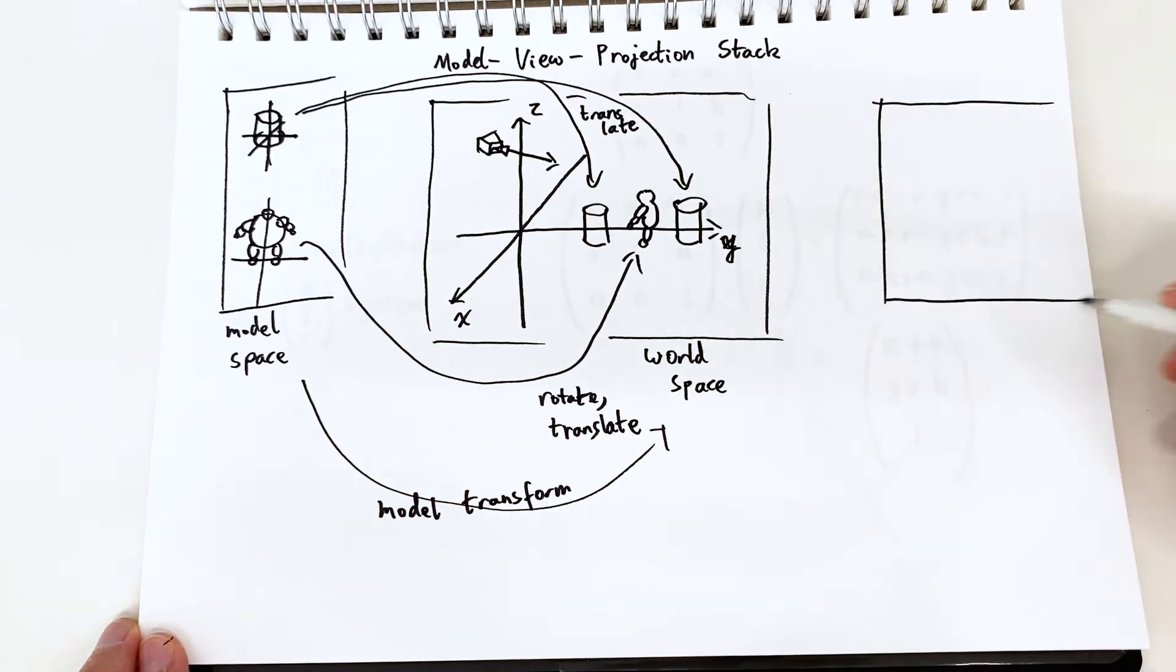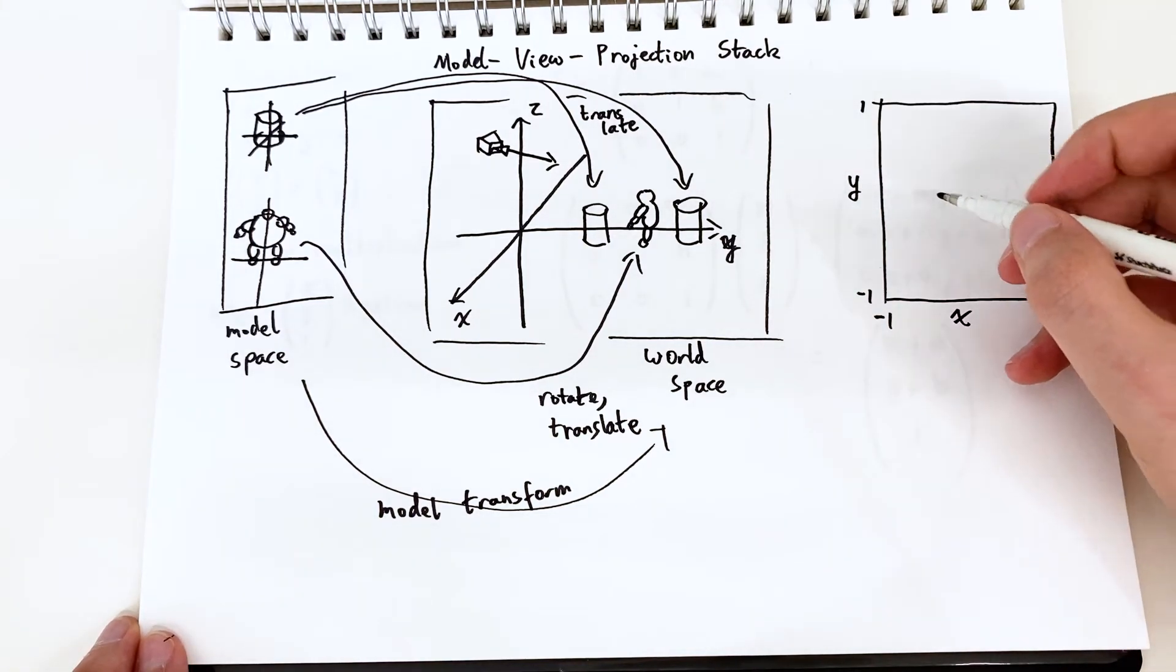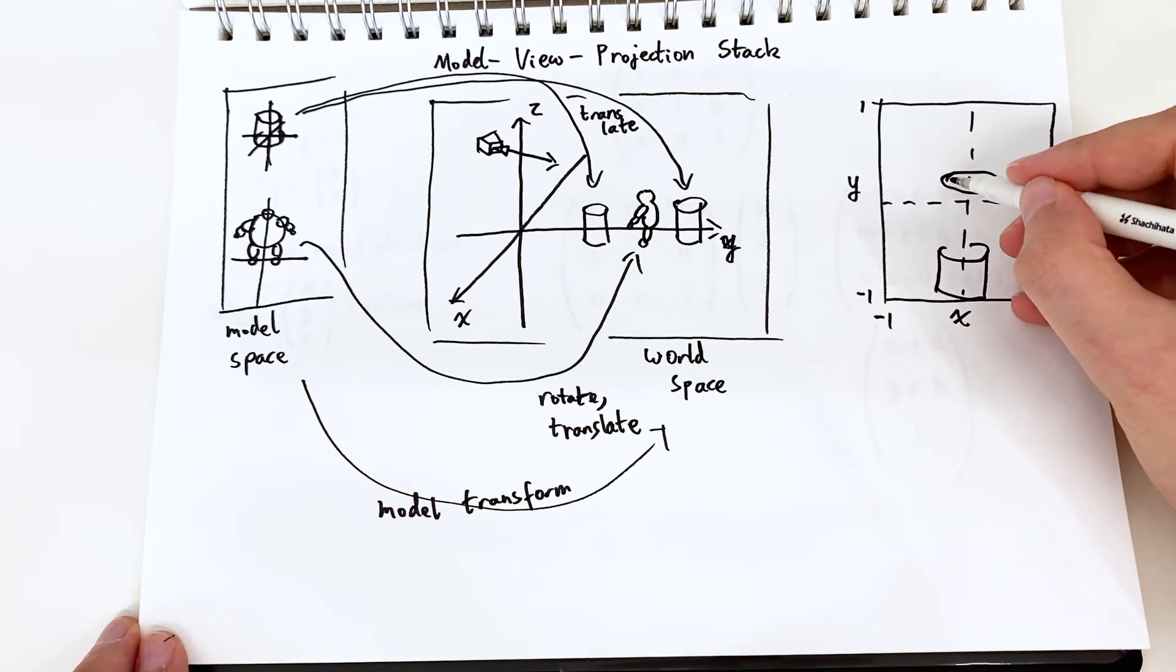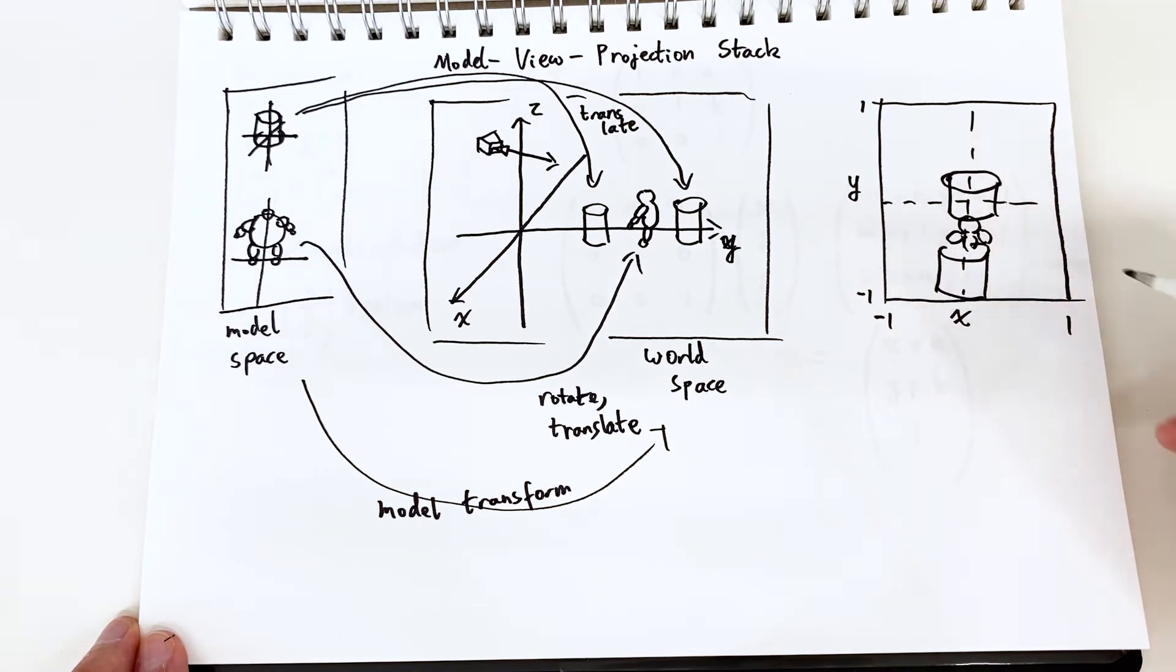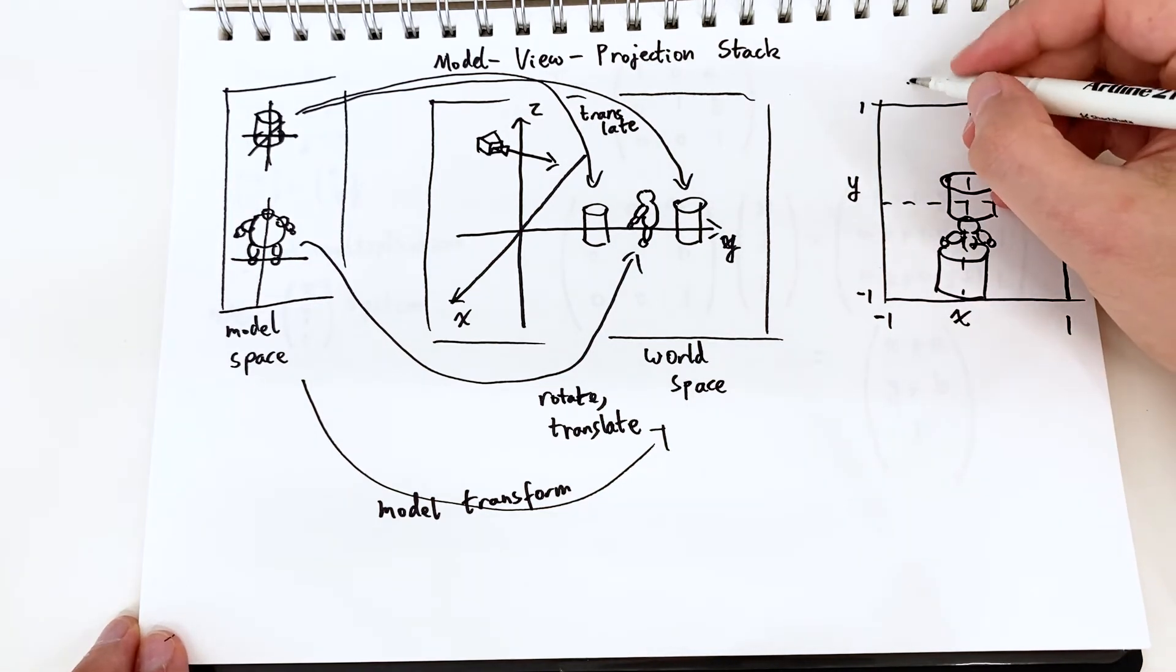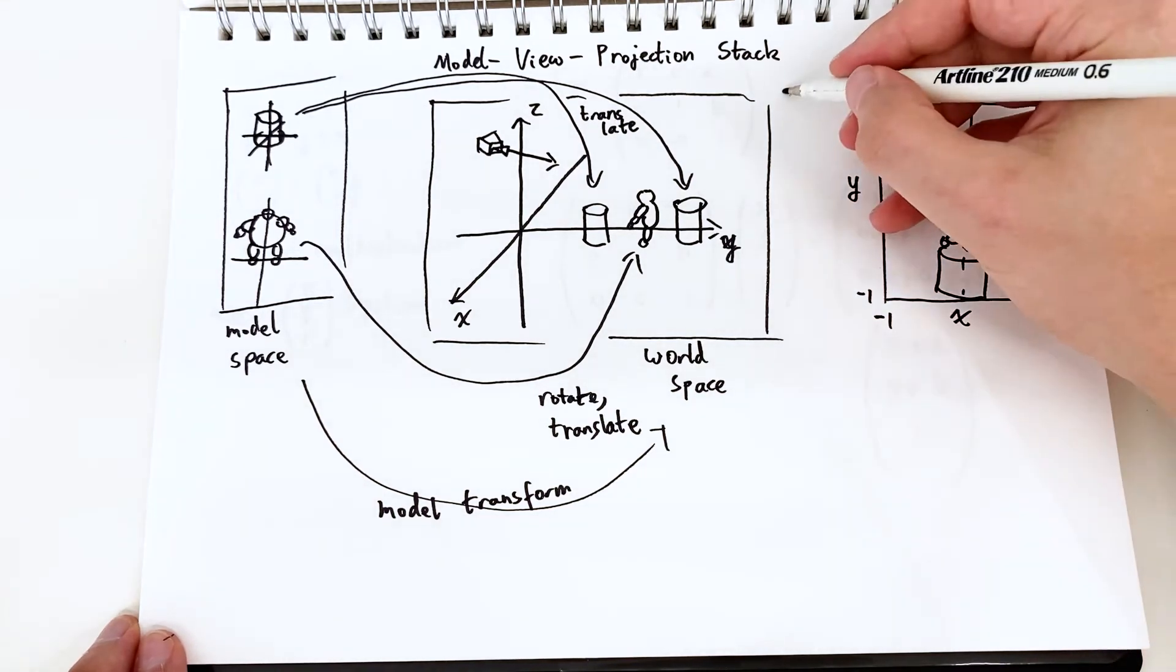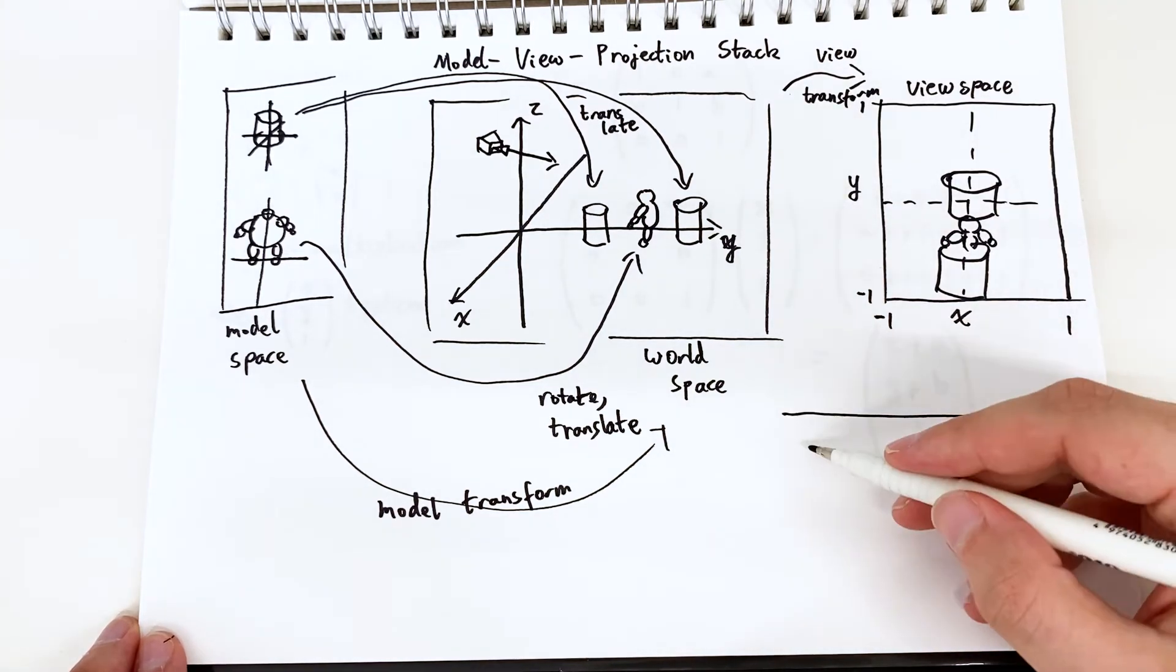We have what's called normalized device coordinates where x goes from negative one to one, negative one being the left and one being the rightmost end of the screen and y similarly. In OpenGL positive one is the top of the screen for the y coordinate. However in Vulkan it's reversed, negative one is the top. Or I could have that the wrong way around. I think that's how it is.